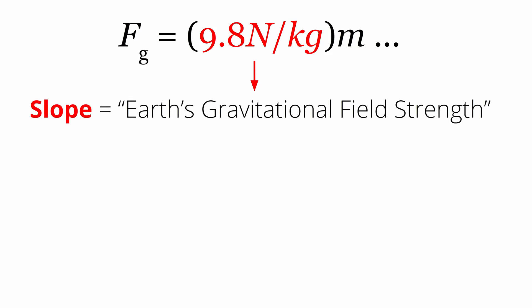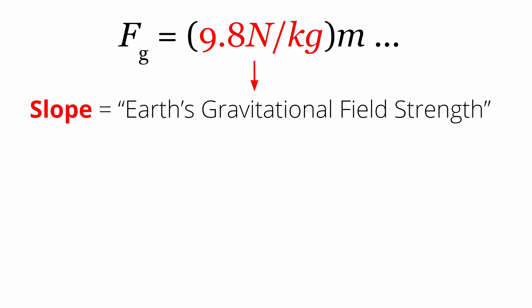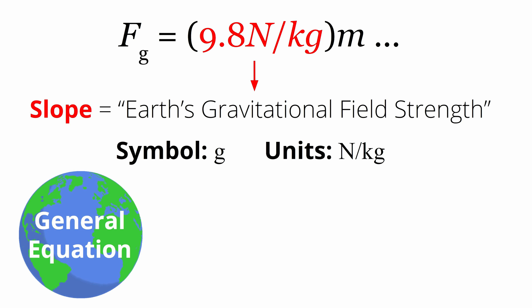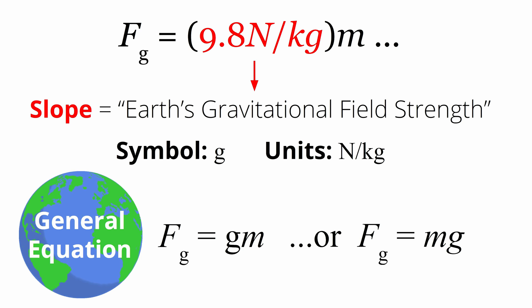After the students reach a consensus about the meaning of their slope and the significance of the y-intercept, you can introduce the concept of gravitational field strength and write the general equation on the board. The general equation shows the relationship between the force of gravity on an object and the object's mass. Tell students that the formal name given to the slope in this experiment is the Earth's gravitational field strength — the size of the gravitational force experienced by each kilogram of an object's mass near the Earth's surface. The accepted gravitational field strength for the Earth is 9.8 newtons per kilogram. The symbol used to represent gravitational field strength is a lowercase g, so the general equation is written as Fg equals m times g.